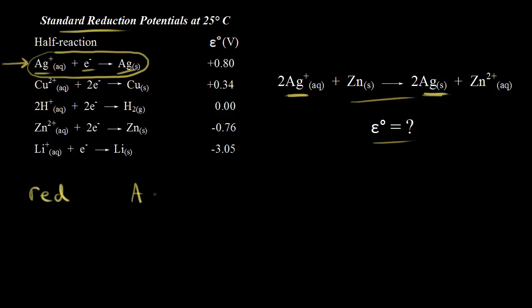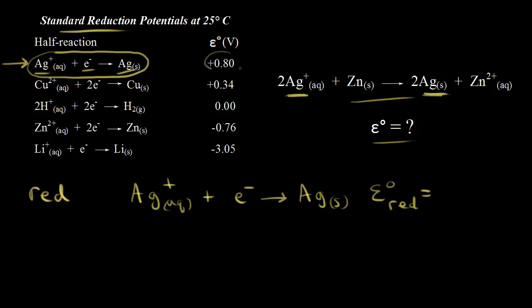So we have Ag+ plus an electron giving us solid silver. The standard reduction potential for this half reaction is positive 0.8 volts.